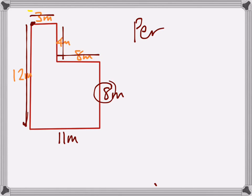Starting in the top corner, we've got three. Add four makes seven. Add eight makes fifteen. Add eight makes twenty-three. Add eleven makes thirty-four. Add twelve makes forty-six. So forty-six metres — remember it's a linear length.